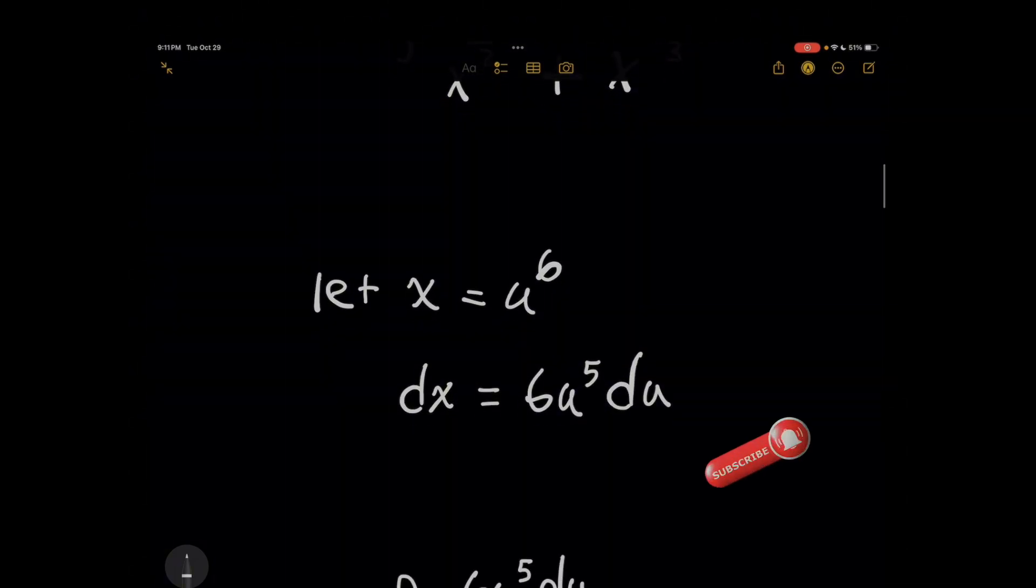Now, it might seem like we're overcomplicating things by introducing this 6u to the 5th on the right, but stick around because you're going to see why that's not the case.